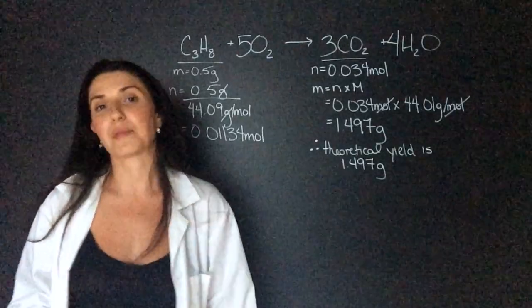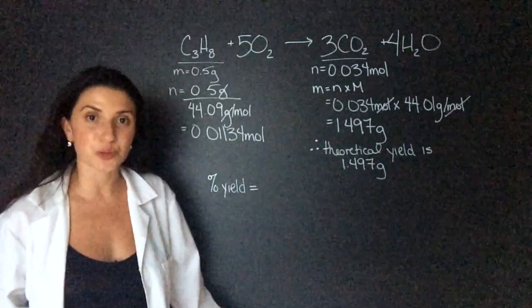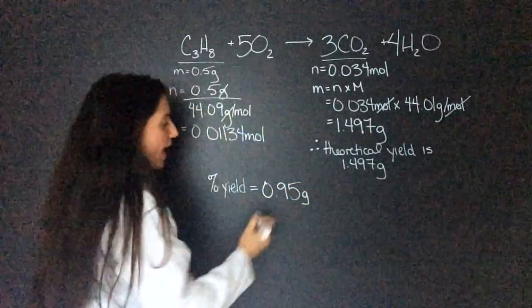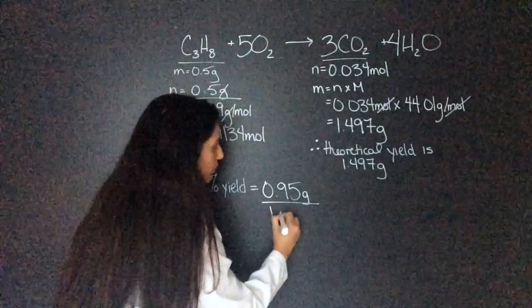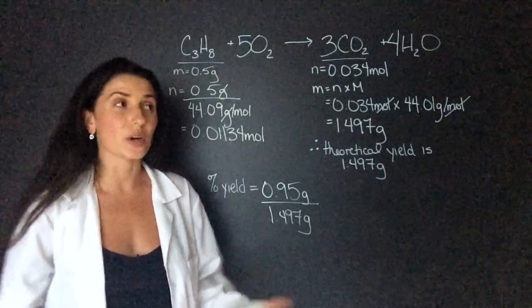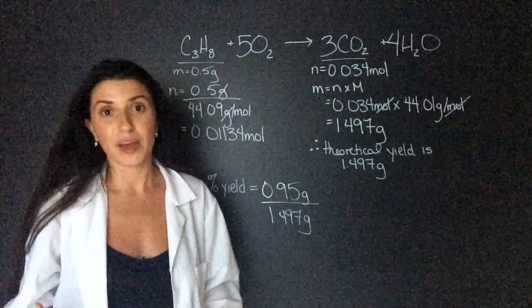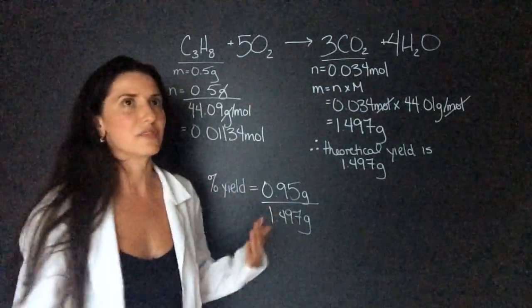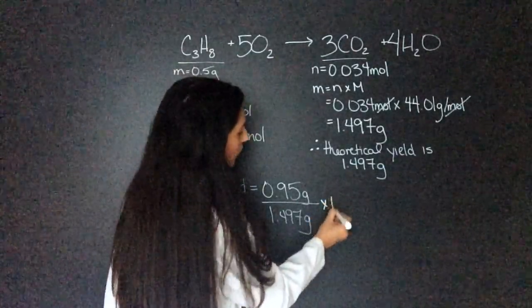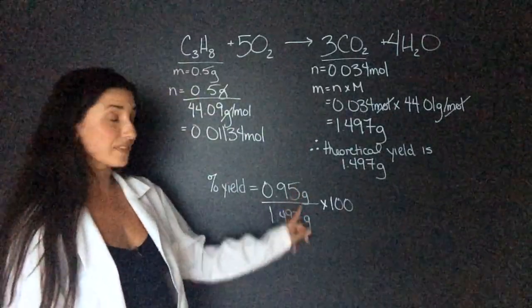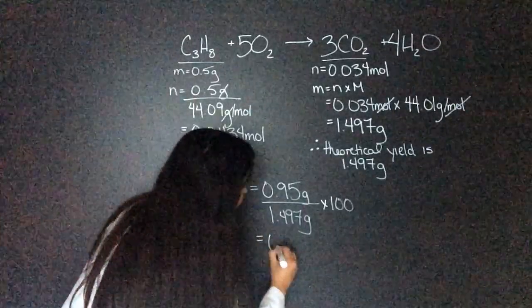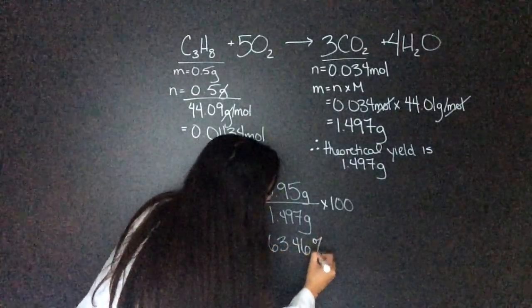In the question they told us that the actual yield was 0.95 grams, and then the theoretical yield is 1.497 grams. Now the actual yield is always going to be given to you or is something you're going to actually find yourself in the lab. I remember second year orgo, this is like a given at the end of every single lab experiment just to see how successful it was. And then we'll multiply by 100. Now remember these have to have the same units and we're good because they're both in grams. I get 63.46%, which, I mean it's over 50%, but it's definitely not great, but that's our percent yield.